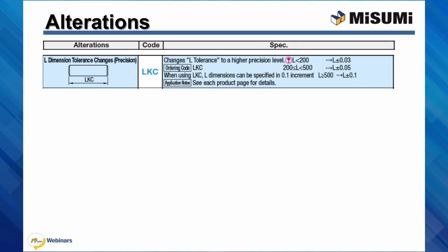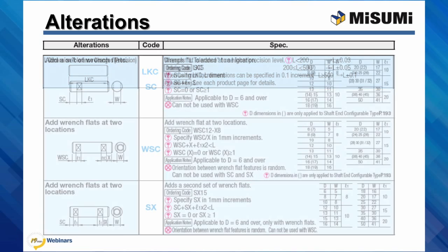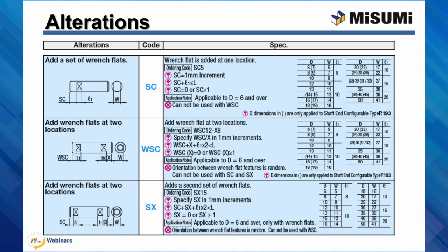In addition to the 60-plus configurable shapes, Misumi offers alterations that can be applied to your shaft design. These alterations include changing the shaft length tolerance to a higher precision level, which also allows you to specify the shaft length in 0.1mm increments instead of the standard 1mm increment. You can also add one or two sets of wrench flats, specifying their location on the shaft, which allow you to easily grip the shaft with a wrench when additional tightening is required.